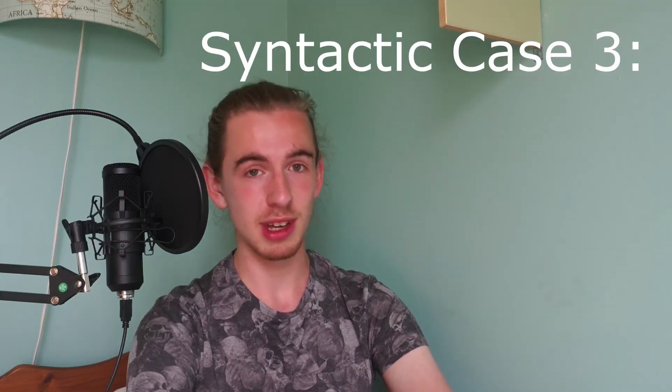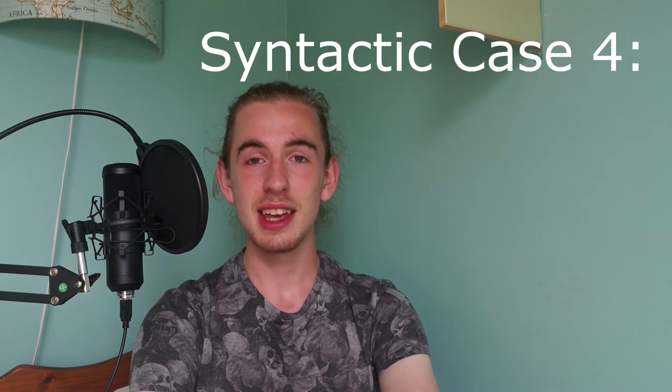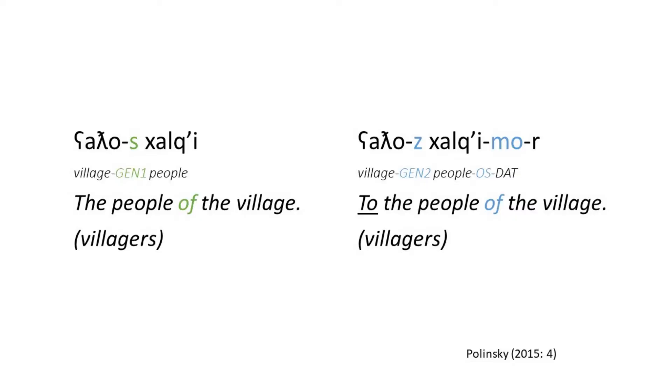Syntactic case number three is the genitive. A noun in the genitive case is usually possessing another noun - it corresponds to the English word 'of', like 'of this village', or the apostrophe-s possessive. It can also show the material something is made of, like 'a bracelet of silver'. Syntactic case number four is the genitive part two - the remix. Tsez has two different genitives: one for possessing absolutive nouns and one for possessing oblique nouns. I would be really hesitant to call these two separate cases, seeing as they fill basically the exact same role.